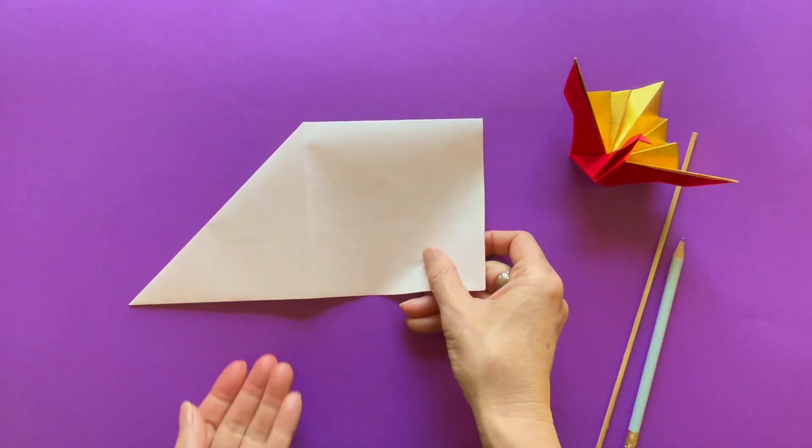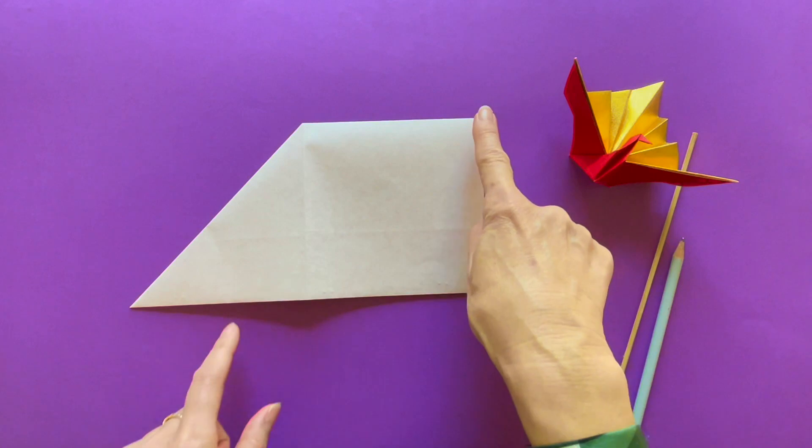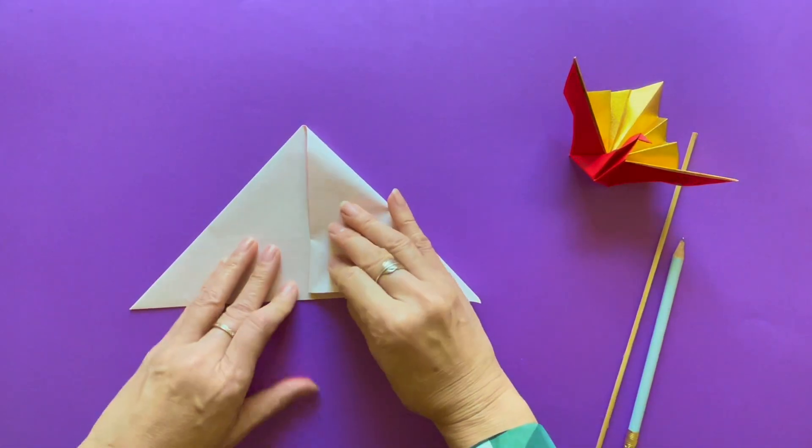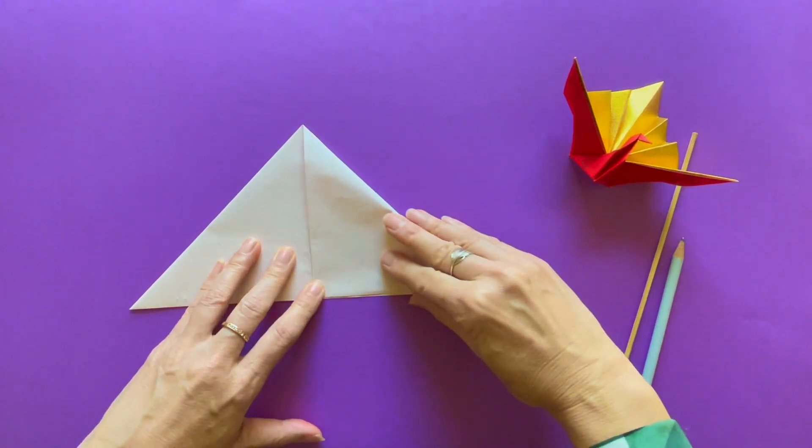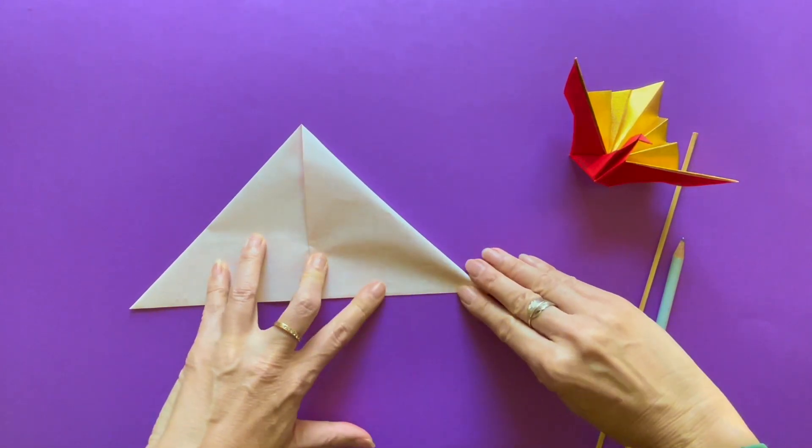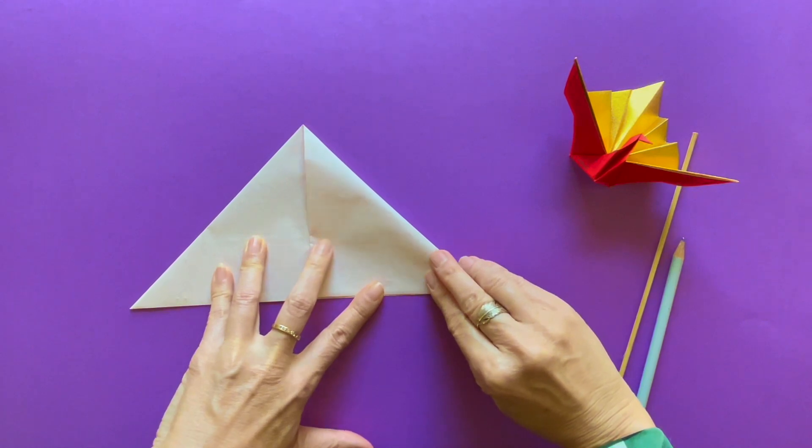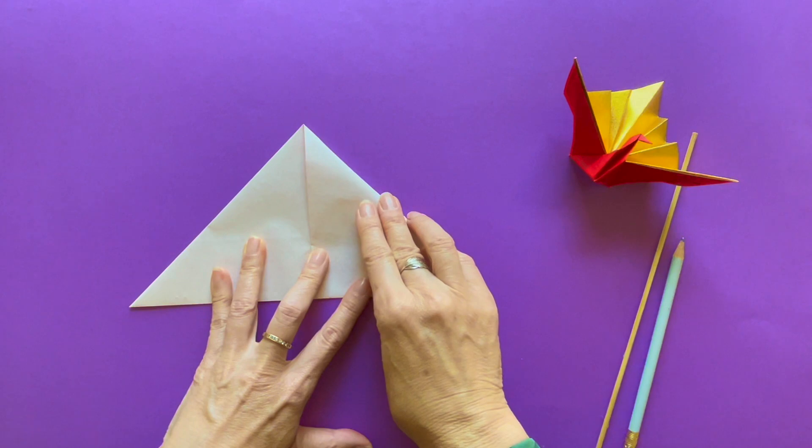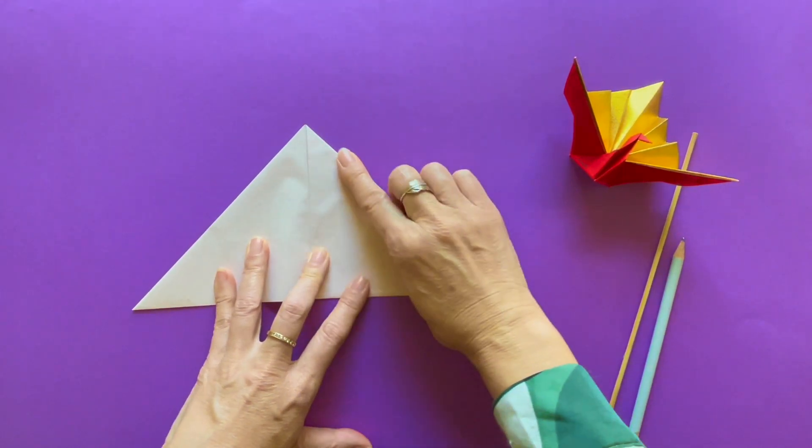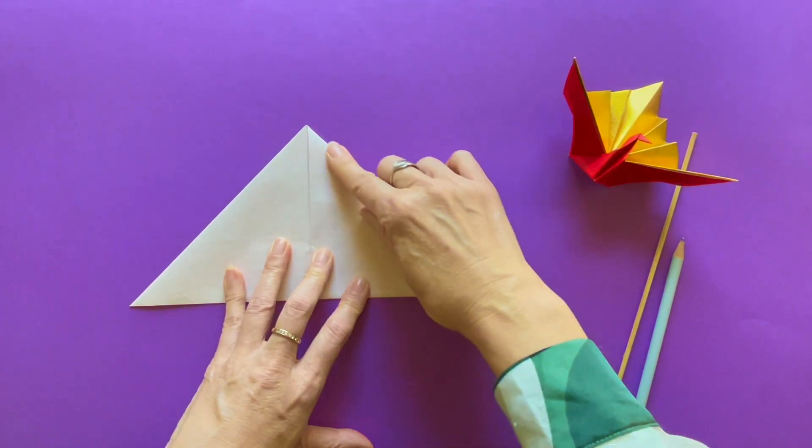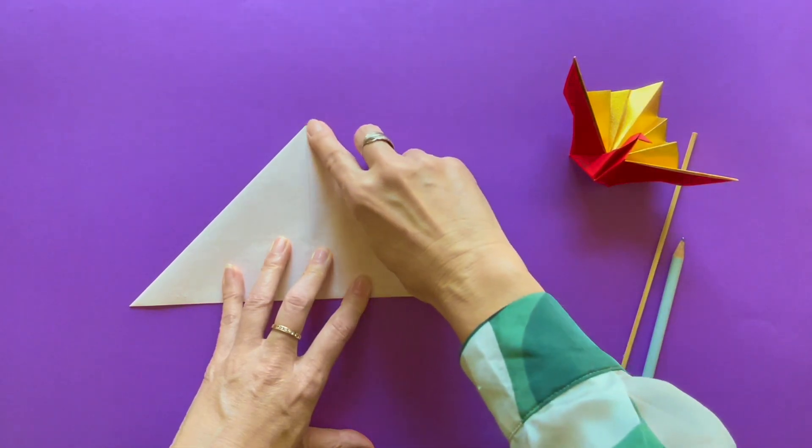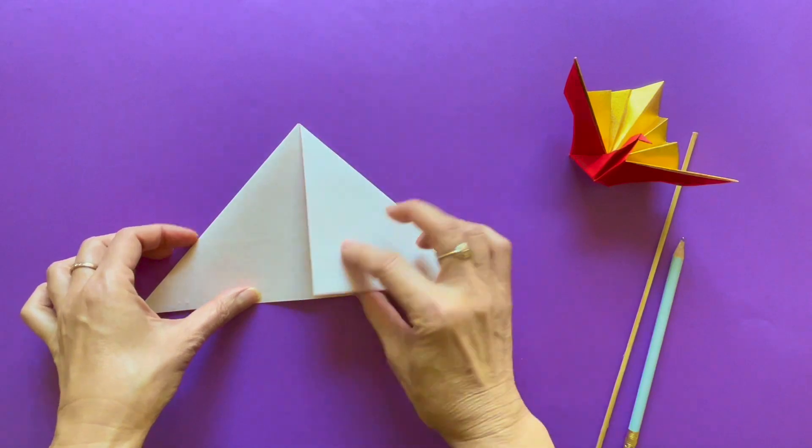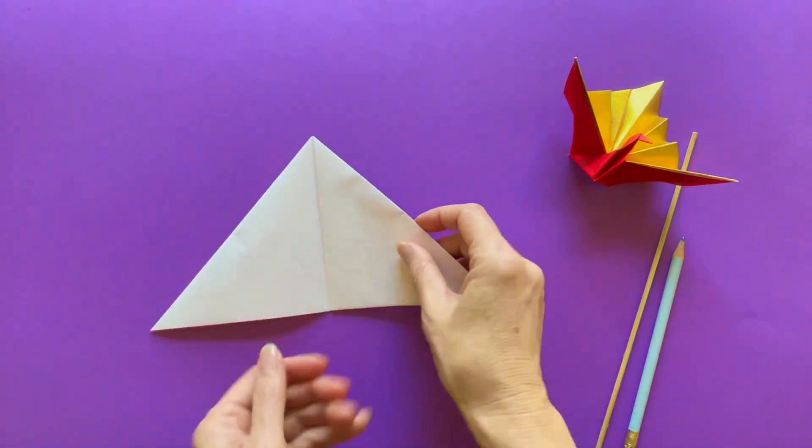Turn it over to the back side where no flap is on. Fold the same way, right top corner to the vertical center crease. And now the model looks like a pyramid. On the top side and the bottom side, both of them have one flap on the right side.